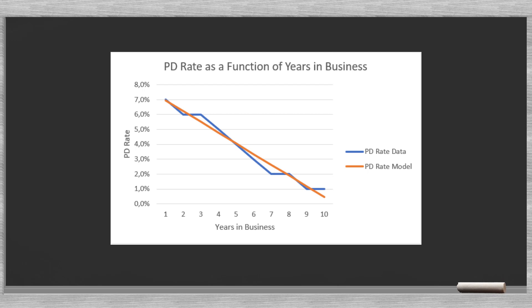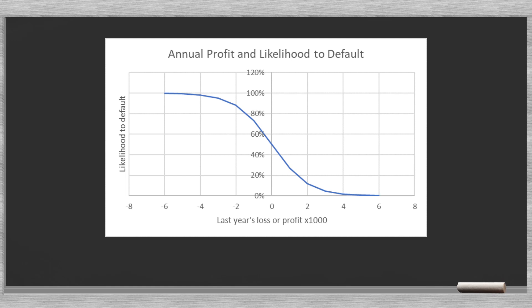Looking at the graph we see that our model in orange follows the real PD data in blue closely. Since the model is a straight line, we call this linear regression.